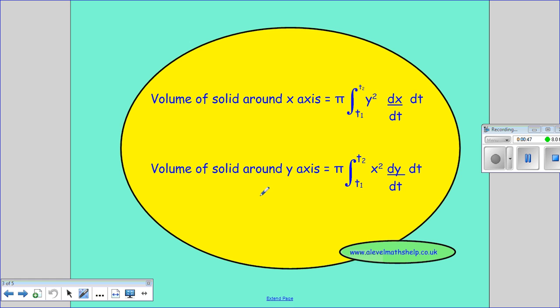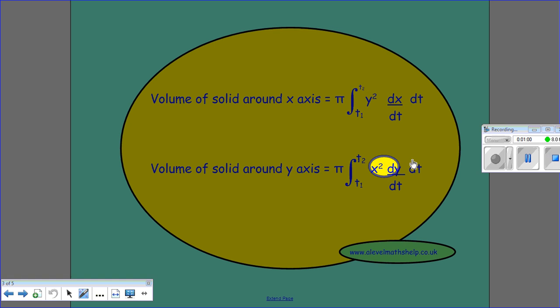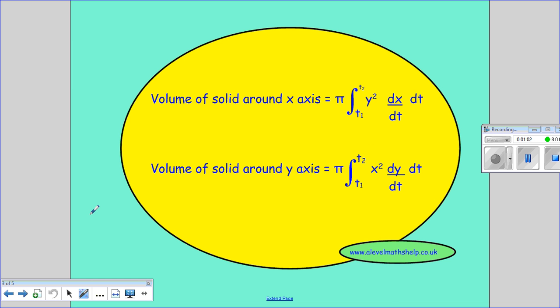And then the volume of the solid around the y-axis is given by π times the integral between t₁ and t₂ of x² dy/dt dt. And again you get the x² dy which is what you would need if you were finding the same thing for the Cartesian equation.